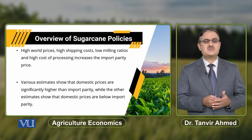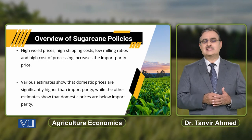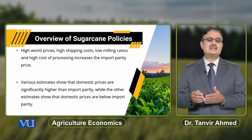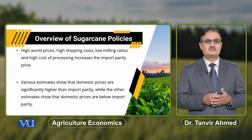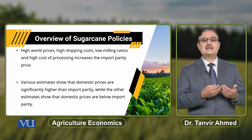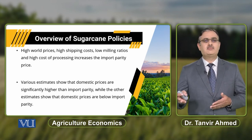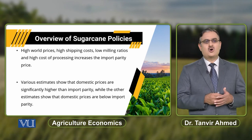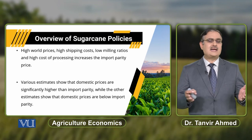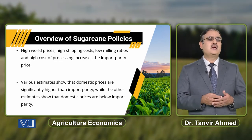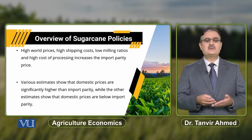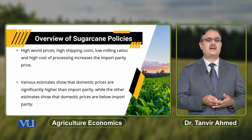When we discuss all this in the context of Pakistan, we can observe that domestic prices are significantly higher than the import parity price. However, there are certain other estimates that show domestic prices are below the import parity price, usually put forward by sugarcane mills, indicating that domestic prices are below the import parity price.